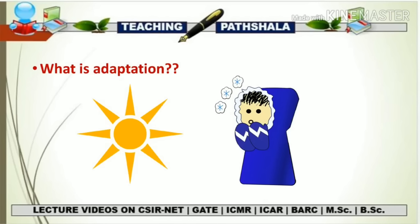The first question which arises is: what is adaptation? We know there is a variety of climates. Taking the example of the human body, it has been adapted in such a way that it can deal with both high and low temperatures. This is called adaptation. Not only humans, but most animals and plants go through different kinds of adaptation so that they can make their survival possible in harsh as well as normal conditions.